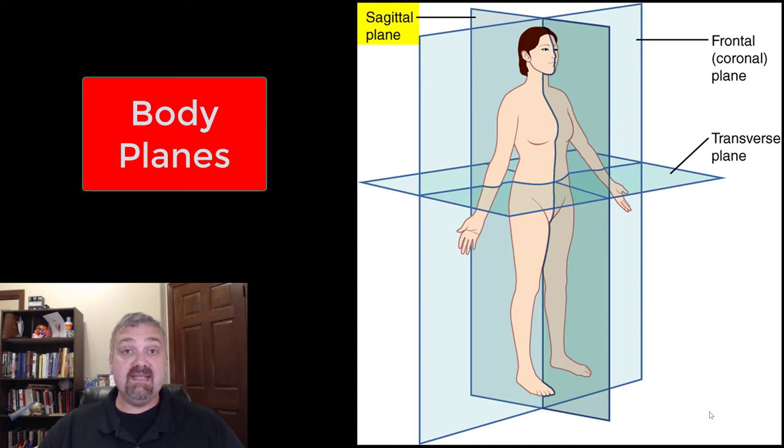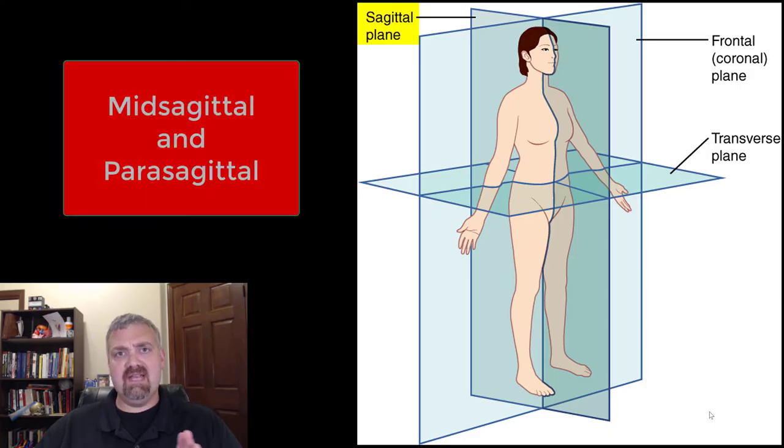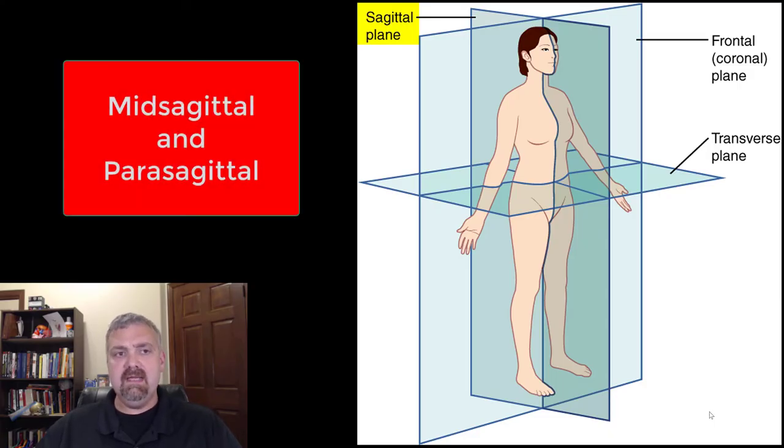But the sagittal plane separates between left and right halves. If you separate it right in the middle, like this green line here, then this is a mid-sagittal section or mid-sagittal plane. If it's off to one side or the other, so the two halves are uneven, it would be called parasagittal. Alright, so that's the sagittal plane.